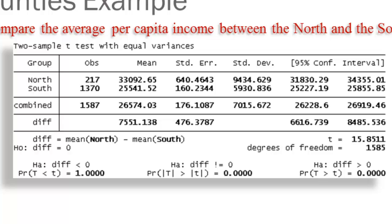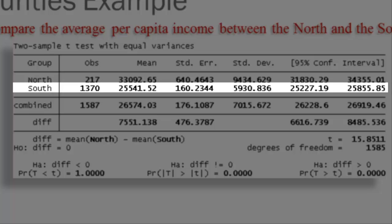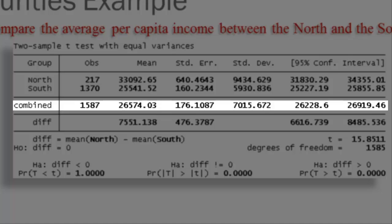The other numbers in the table might be useful to you and we can go back and look at them now. For example, looking at the north we see that there's 217 observations, 217 counties. We get the average, which is about $33,092. We get the standard error. This is the same standard error that we learned how to calculate earlier for single sample means. We're given the standard deviation of the per capita income and we get a 95% confidence interval. We get the same information for the south, the same information for the north and south combined, that is ignoring our independent variable, and finally we get the same statistics for the difference.